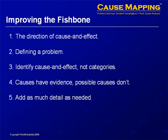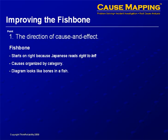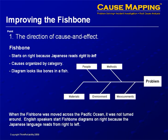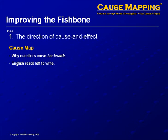The first point is the direction of cause and effect. The fishbone starts on the right because Japanese reads traditionally right to left. So Ishikawa started with the problem, and then as he read across the page, he identified causes of that problem. English speakers read left to right, so you'd actually start with the effect on the left.